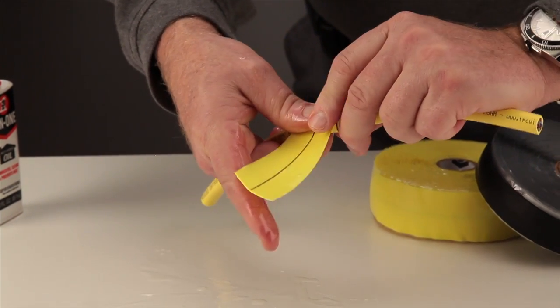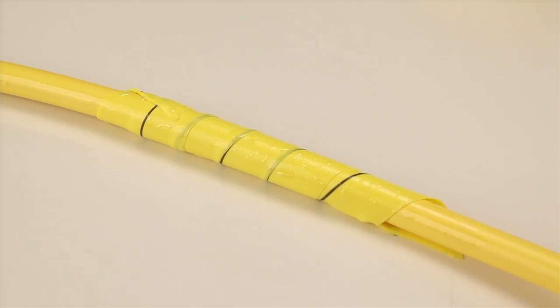If we wrap the cable with Bulko Wrap and let it soak in, Bulko Wrap will still stick to itself.